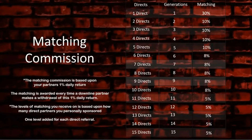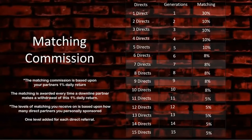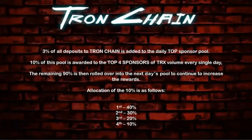On all your direct partners, level 1, you will receive a 30% match when they make a withdrawal — this is based upon the 1% daily return, not the direct commission. For example, if your partner makes a withdrawal every 10 days, you will receive a 30% match on the 10% they have accumulated and withdrawn. On all partners at levels 2 through 5, you receive a 10% match. On levels 6 through 10, you receive an 8% match. On levels 11 through 15, you receive a 5% match — and this applies every single time a partner makes a withdrawal.